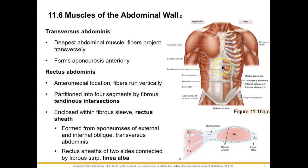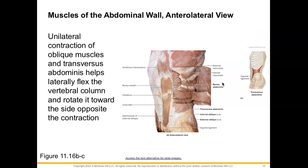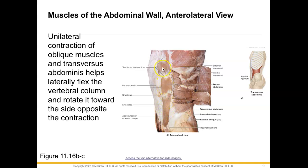The rectus sheaths on the two sides are connected by the linea alba — a fibrous strip that runs down the middle of the abdomen, which you can look for in the cadaver lab. In the cadaveric view, we can identify the external oblique, the next layer as the internal oblique, then the transversus abdominis, and more medially the rectus abdominis with its tendinous intersections.